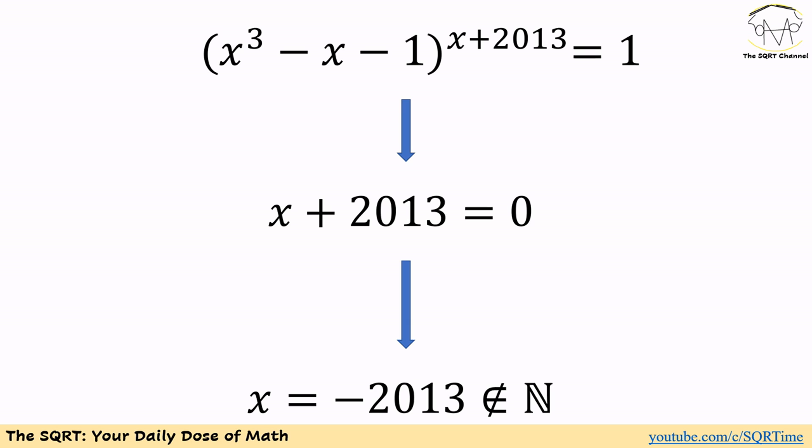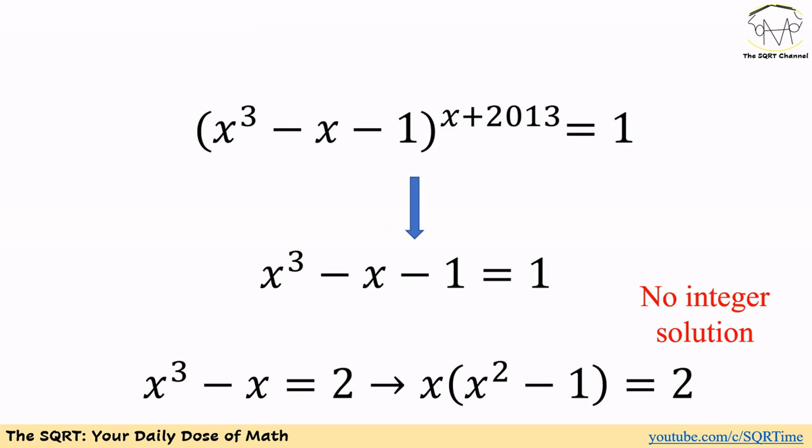Let's try a different option. When we have an expression with base and power equal to 1, another option is base equals 1. So we want x³ - x - 1 = 1. To solve this, we have x³ - x = 2, or x(x² - 1) = 2.